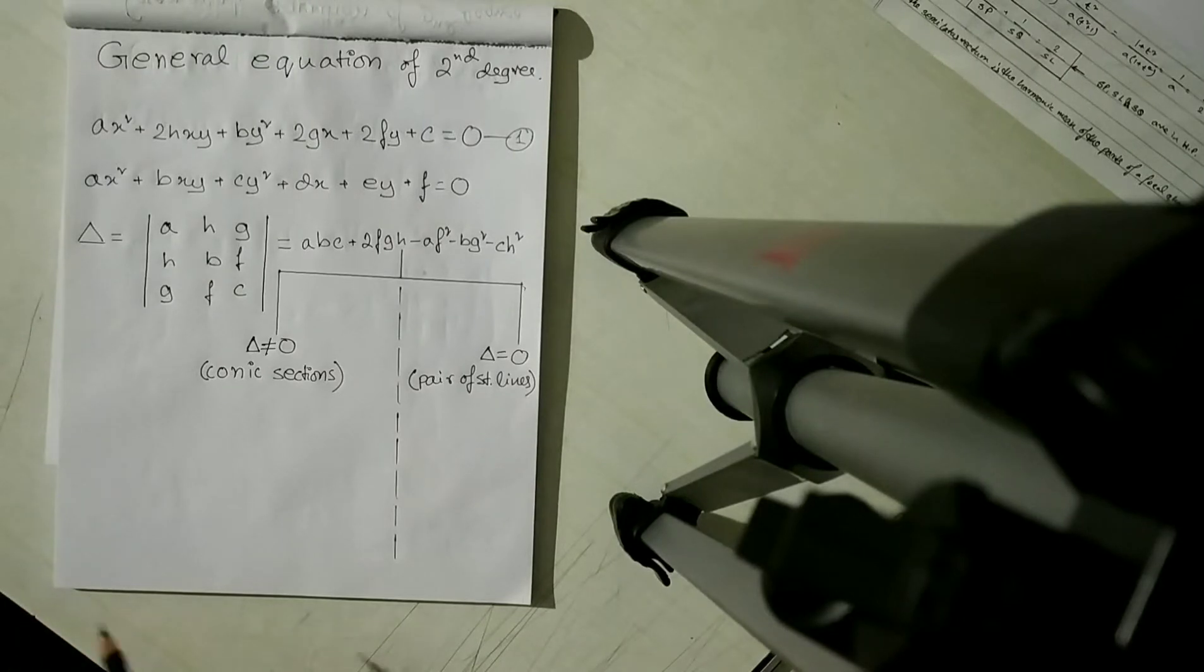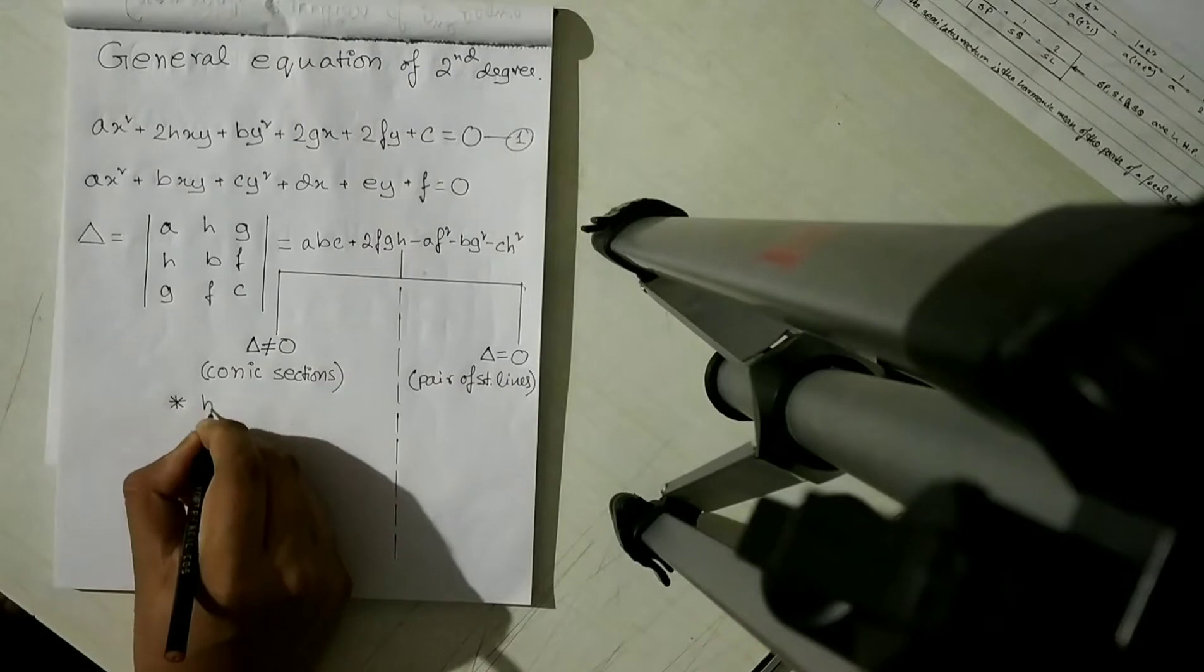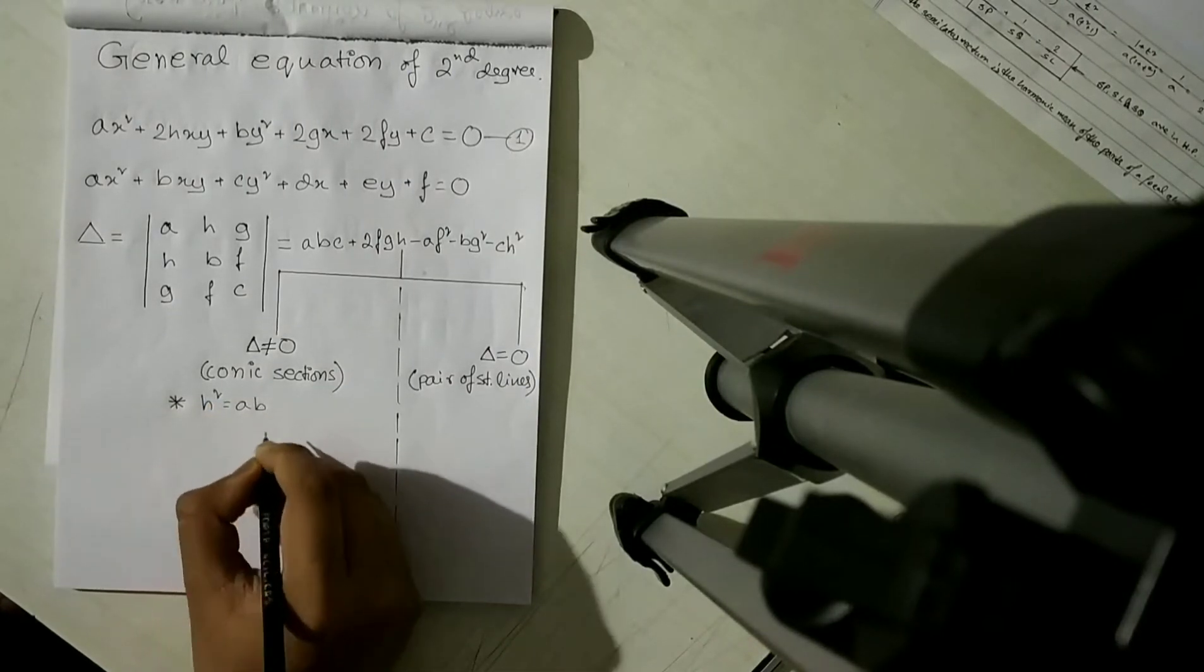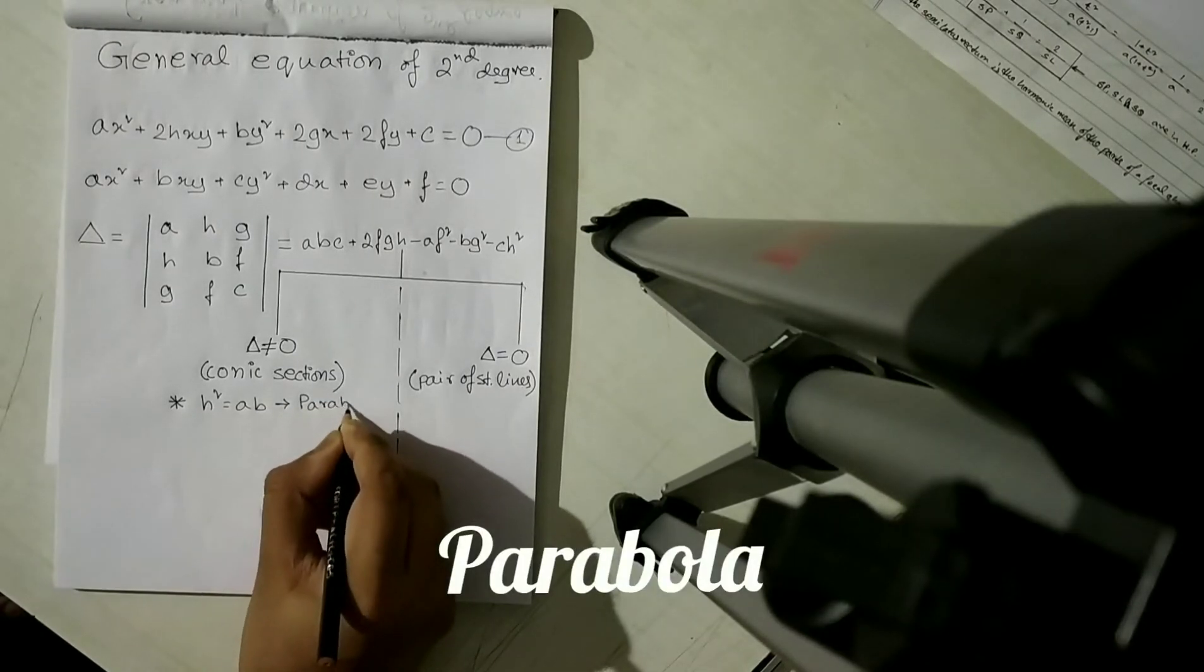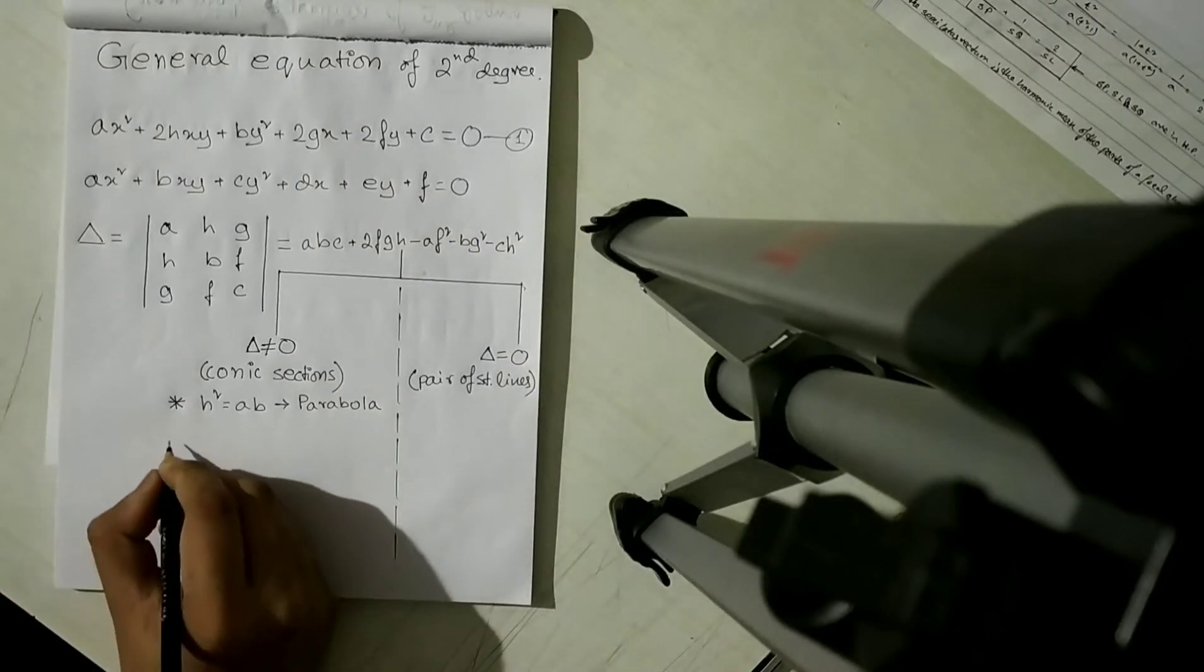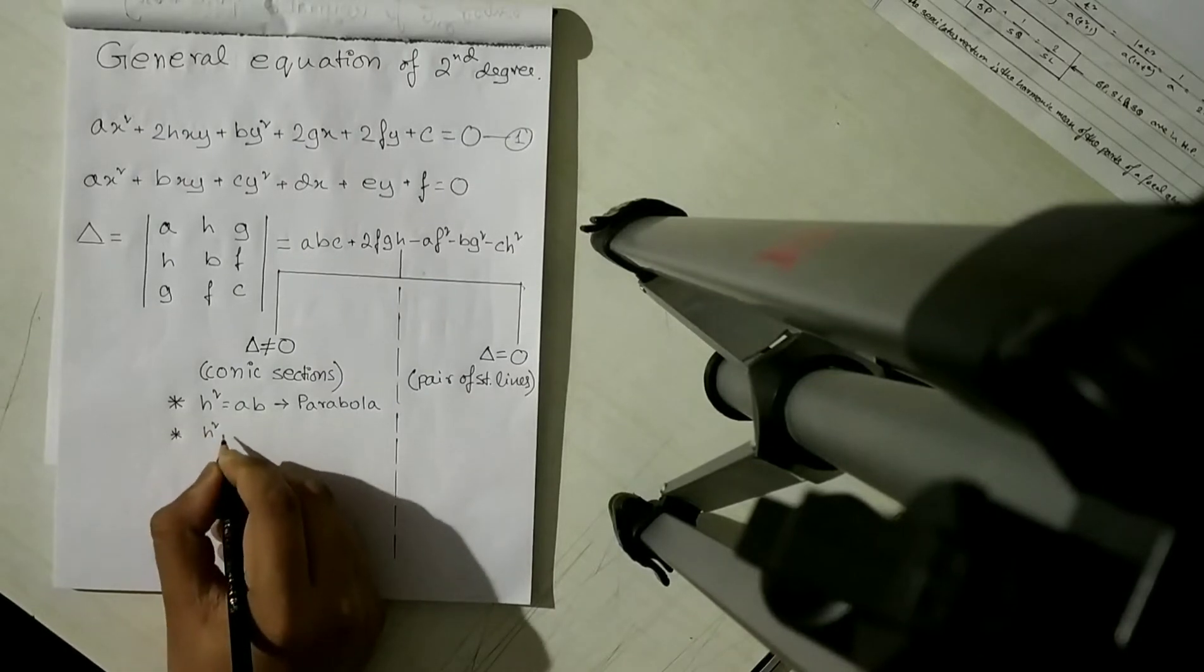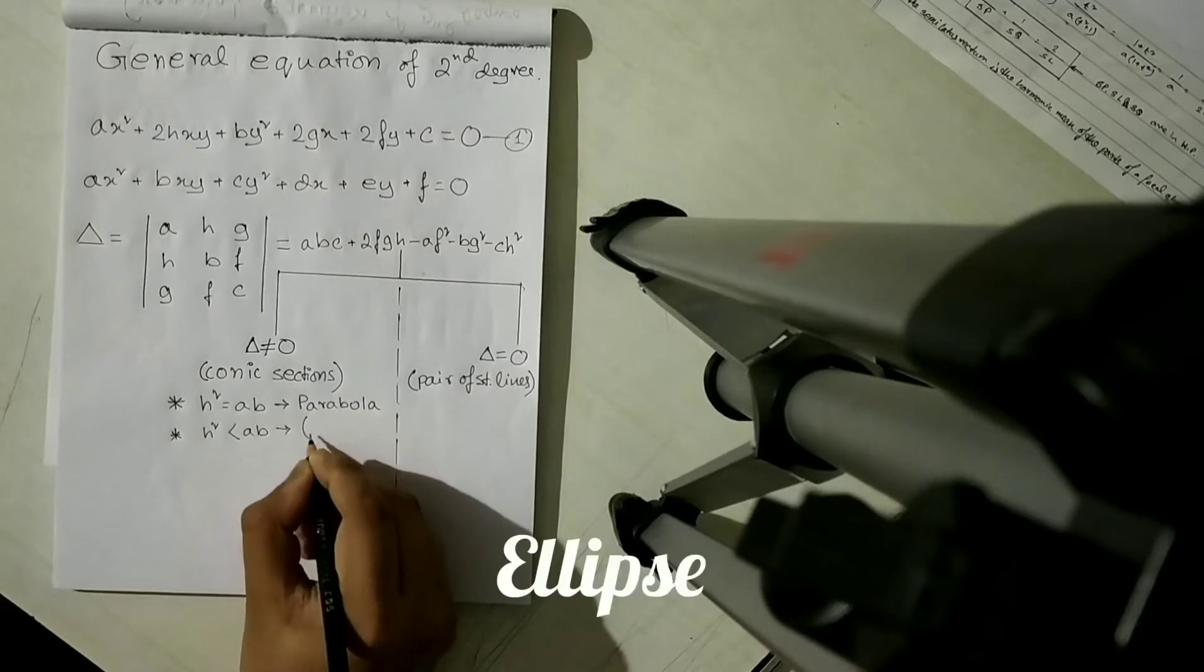So first case: if h² is equal to ab, it will give parabola. Now next case: if h² is less than ab, it will give ellipse.